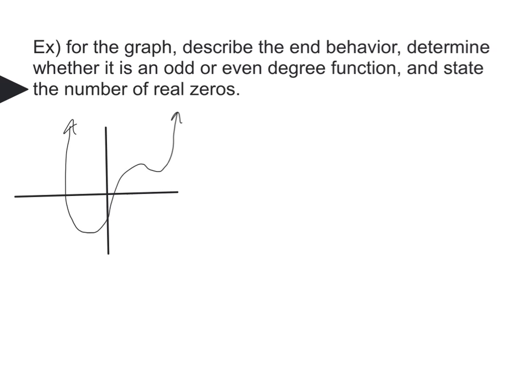So the example says for the graph, describe the end behavior. That's our first part. Then our second part is determine whether it's an odd or even degree function. So that means is it quadratic, is it quartic, does it have a six degree, something like that? Or is it an odd, which would mean linear, cubic, or quintic? And then the last part is state the number of real zeros, and that's basically how many times it crosses the x-axis.